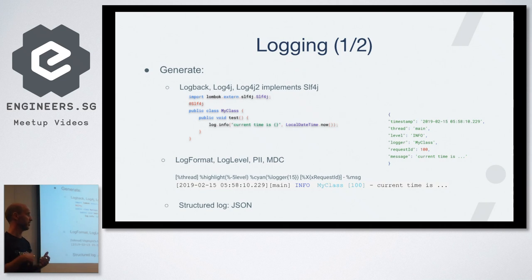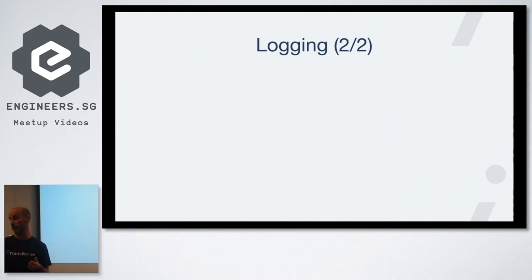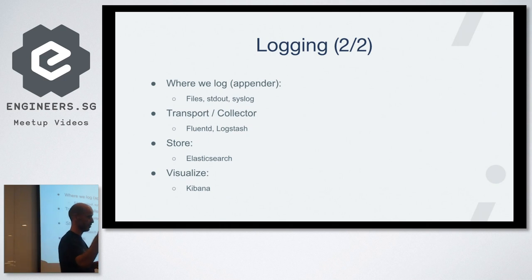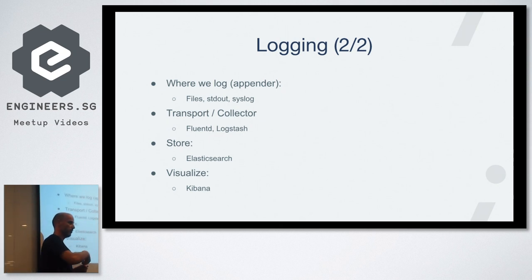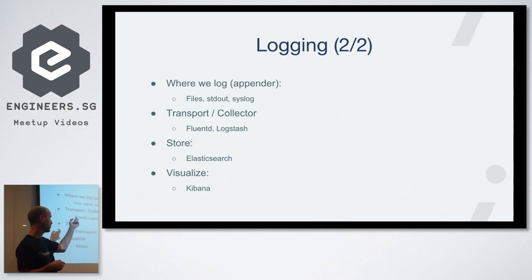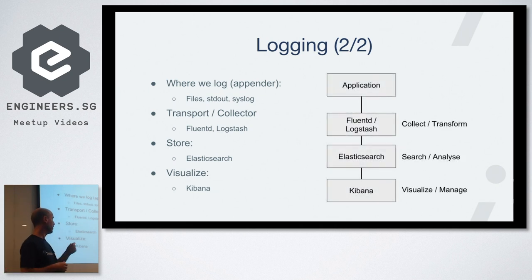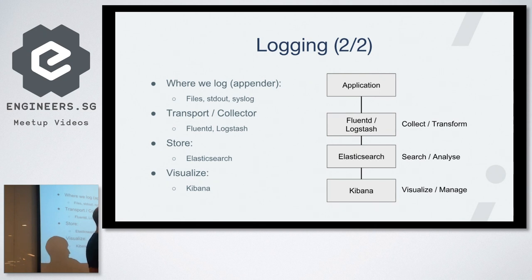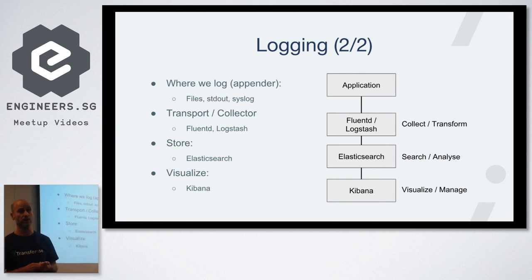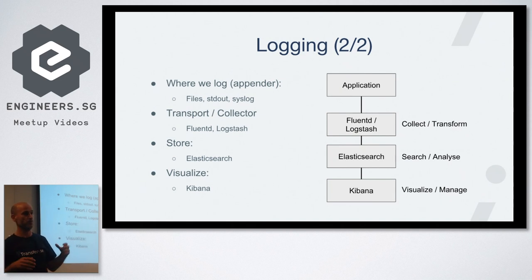After generating the logs, the application needs to decide where to send them — options include files, standard output, or syslog over the network. With multiple services each sending to different files, you need something to collect all this information: a collector or transport layer, such as Fluentd or Logstash. These collect logs, perform transformations and filtering, and store them in a data store like Elasticsearch. Then you attach a UI such as Kibana — hence the ELK stack.